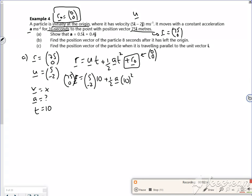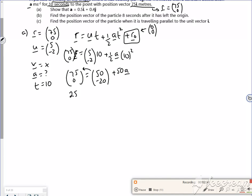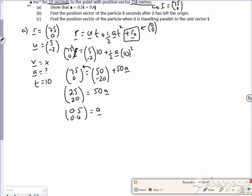So I've got 75, 0 is 50 minus 20. That's going to be plus 50 lots of a. So if I take away the 50 minus 20, that will give me 25, 20 is 50 lots of a. If I divide through by 50, it's going to give me a half, and 20 over 50 is 0.4. So then a is 0.5i plus 0.4j, which is what it wants.